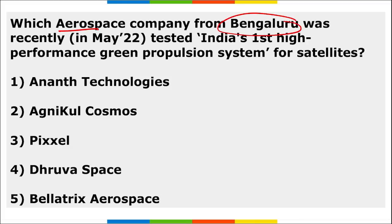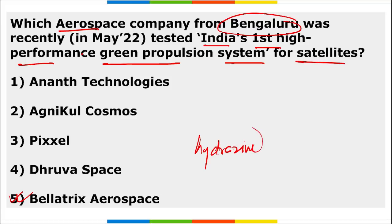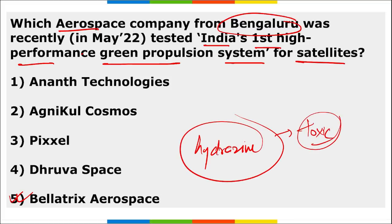Bellatrix Aerospace, a Bangalore-based startup, tested India's first high-performance green propulsion system for satellites. This system reduces the use of hydrazine, which is a toxic substance. The new green propellant reduces toxicity compared to hydrazine and is also safer to store.